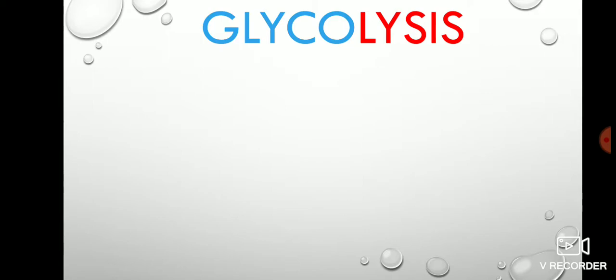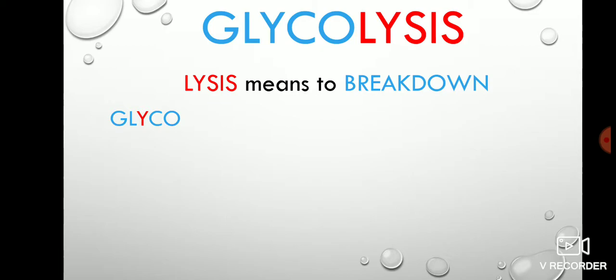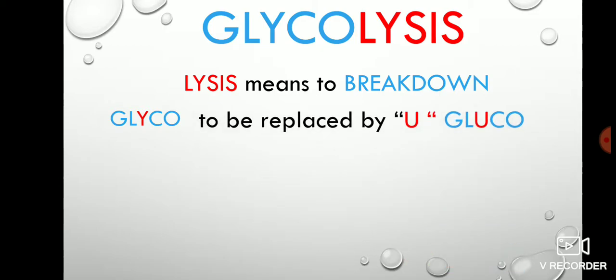First we'll start with glycolysis. You need to focus on the word 'lysis' — lysis is a Greek word which means to break down. We all studied cell lysis in school, meaning breakdown of the cell wall. Now, in the word 'glyco', replace the 'y' with 'u' to get 'gluco', making it glucose — because glycolysis means breakdown of glucose.